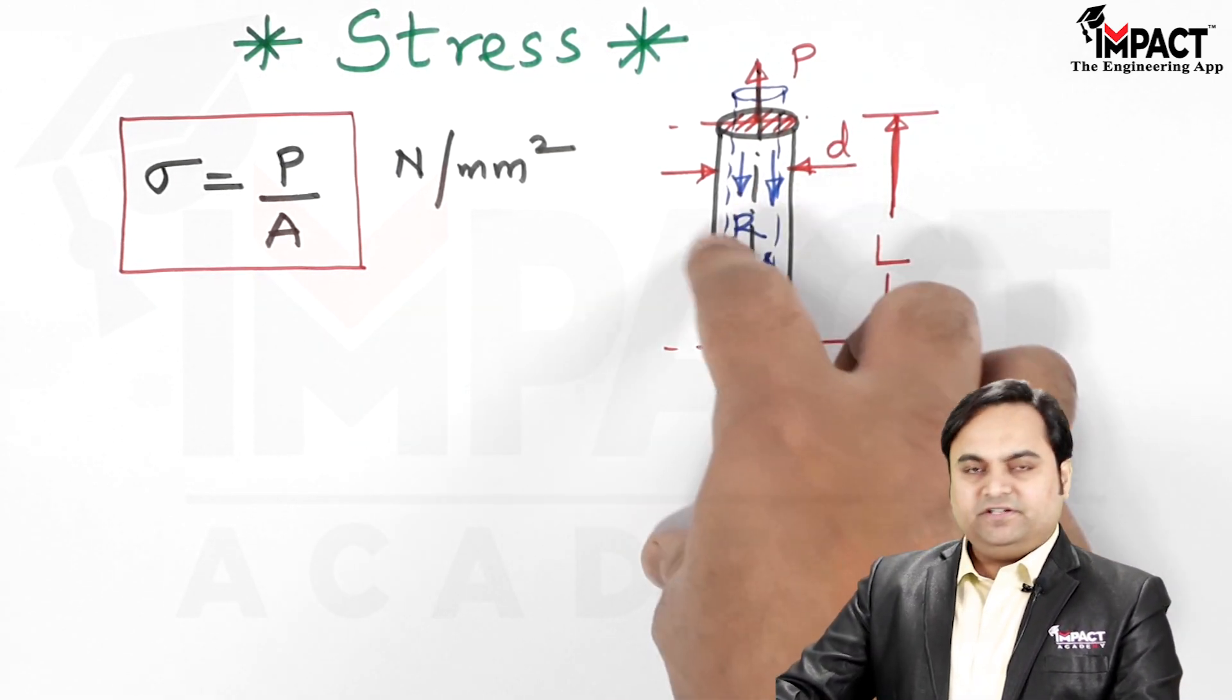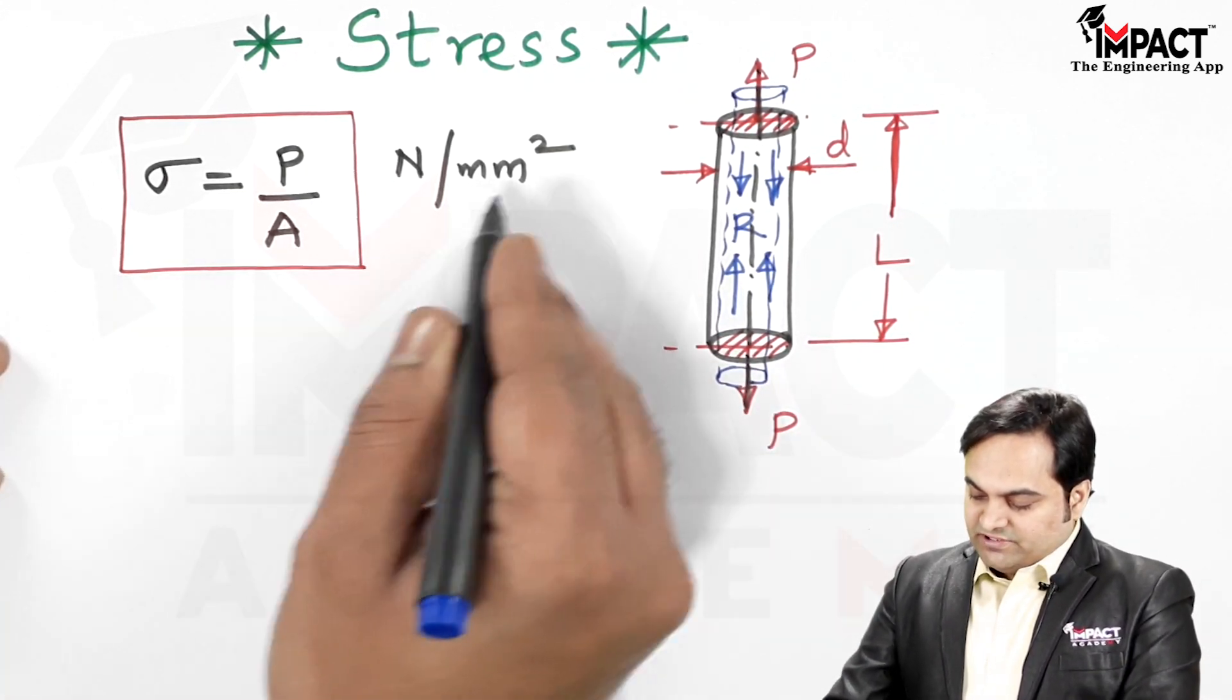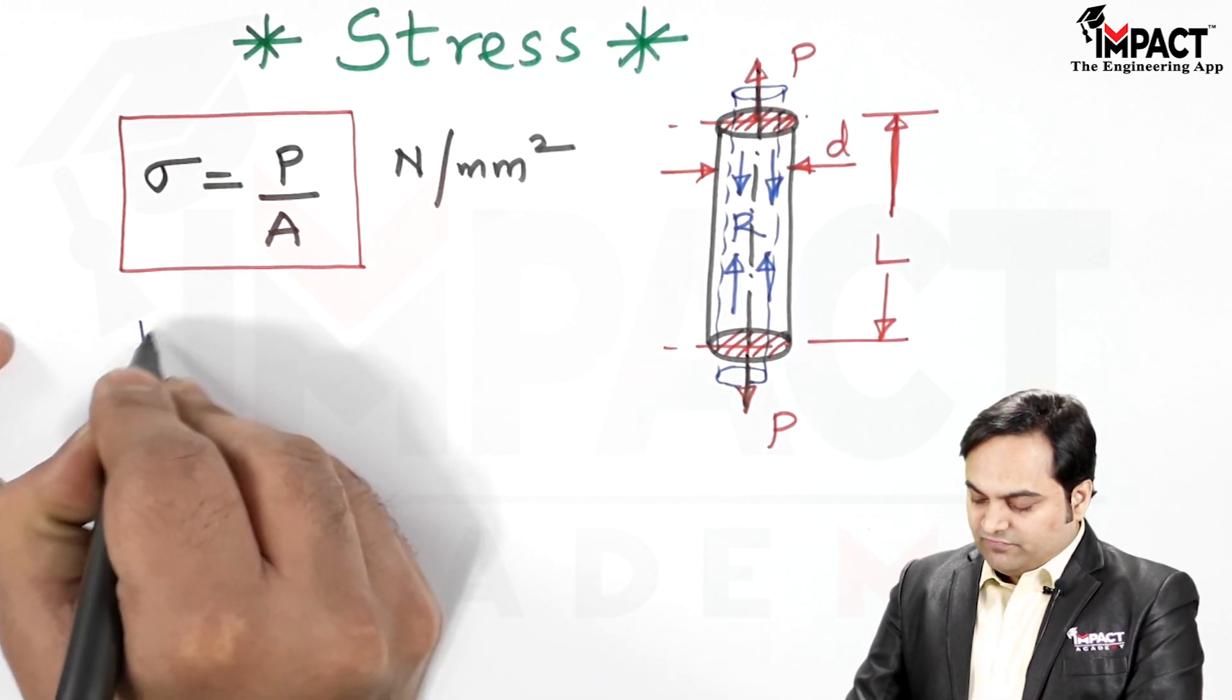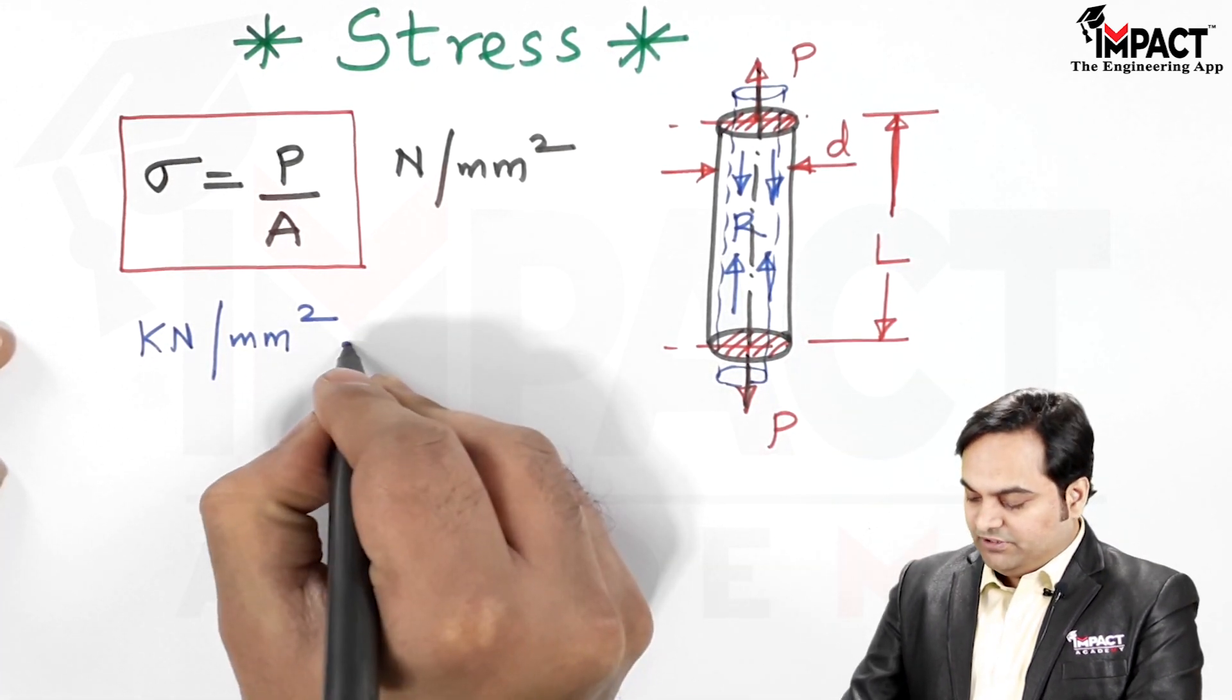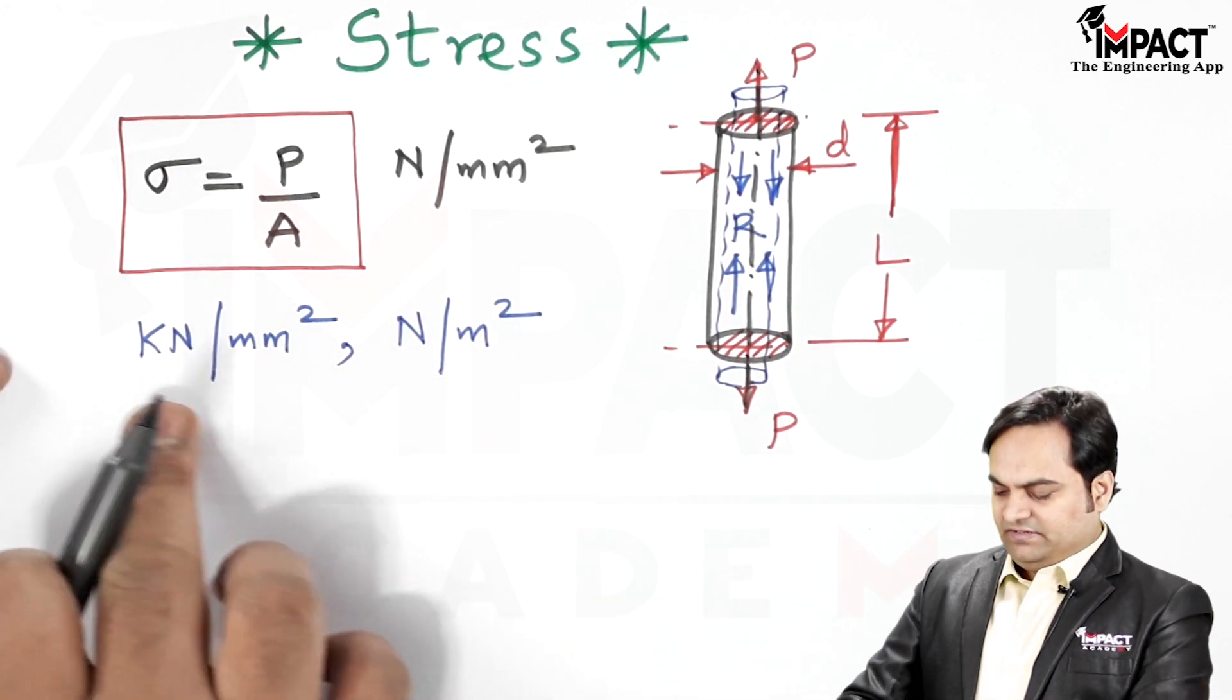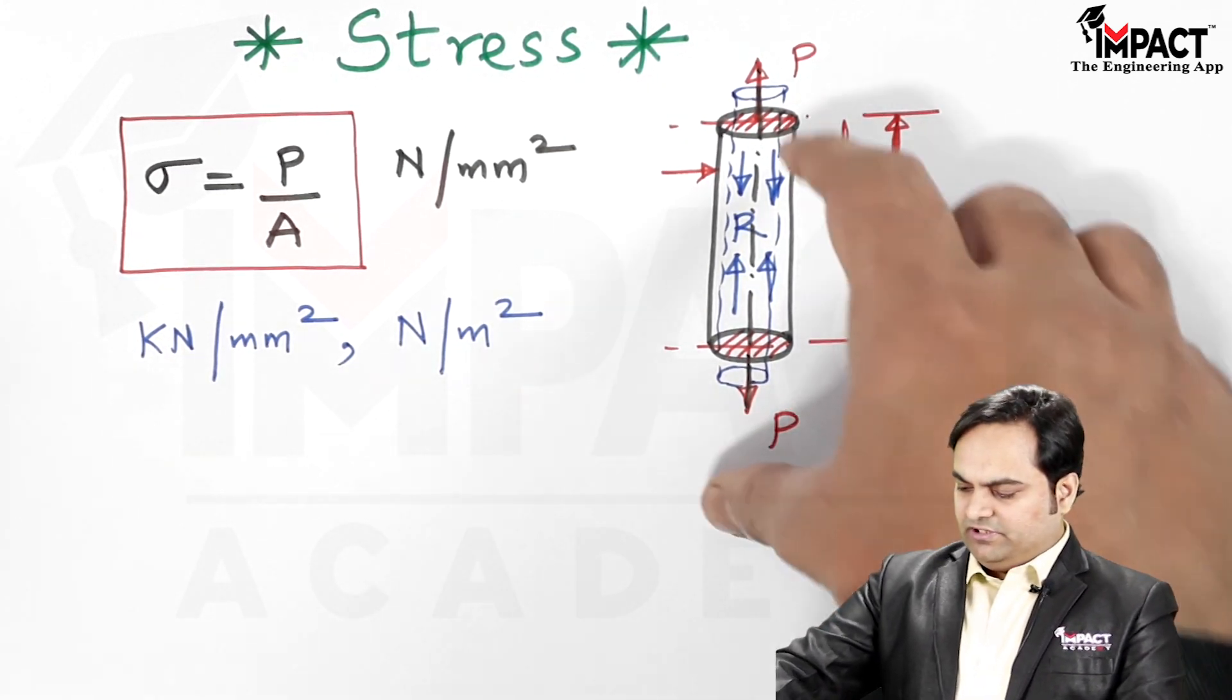Stress is the internal resistance to the external load. The unit of stress is Newton per mm square; it can also be in terms of kilonewton per mm square or Newton per meter square. Simply we can say that it is force per unit area, that is called as stress. There are various types of stress.